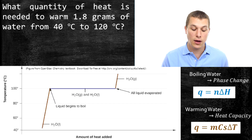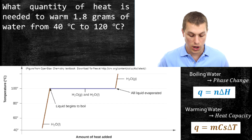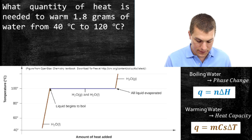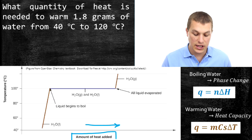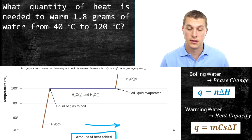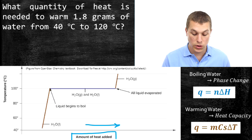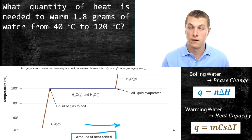We're going to take water from 40 degrees Celsius to 120 degrees Celsius — heating up 1.8 grams of water. We're going to add heat to it, and the x-axis is the amount of heat added. As we move in this direction, we're adding more and more heat to that water. You can imagine water on the stove starting at 40 degrees Celsius, and this axis keeps track of how much heat we've poured in from the stove.